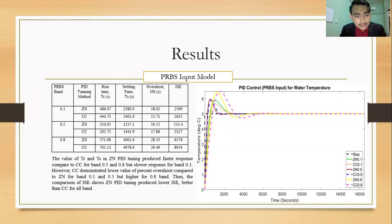However, Cohen-Coon demonstrates lower value of percent overshoot compared to Ziegler-Nichols for band 0.1 and 0.5 but higher for 0.8. Then the comparison of ISE show Ziegler-Nichols PID tuning produce lower ISE which is better than Cohen-Coon for all band.